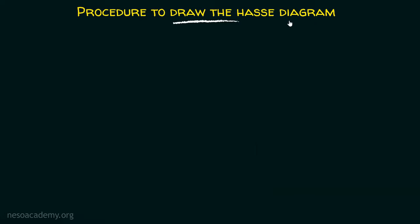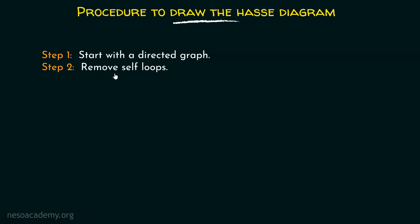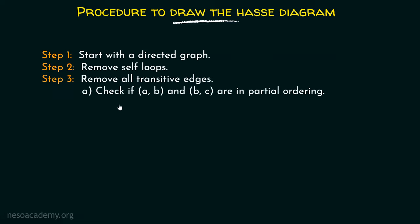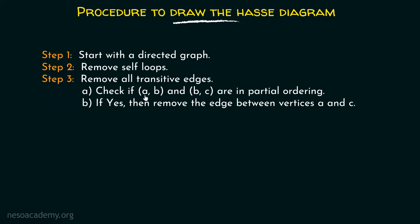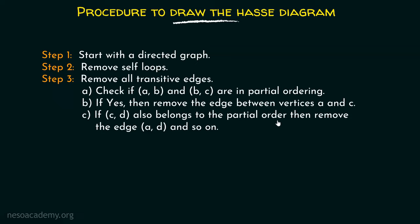Now we will see the procedure to draw the Hess diagram. Step 1: start with the directed graph. Step 2: remove self-loops. Step 3: remove all transitive edges. The procedure to remove transitive edges is: check if (A, B) and (B, C) are in the partial ordering — if so, remove the edge between A and C. If (C, D) also belongs to the partial order, remove edge (A, D), and continue in this way to remove all transitive edges.